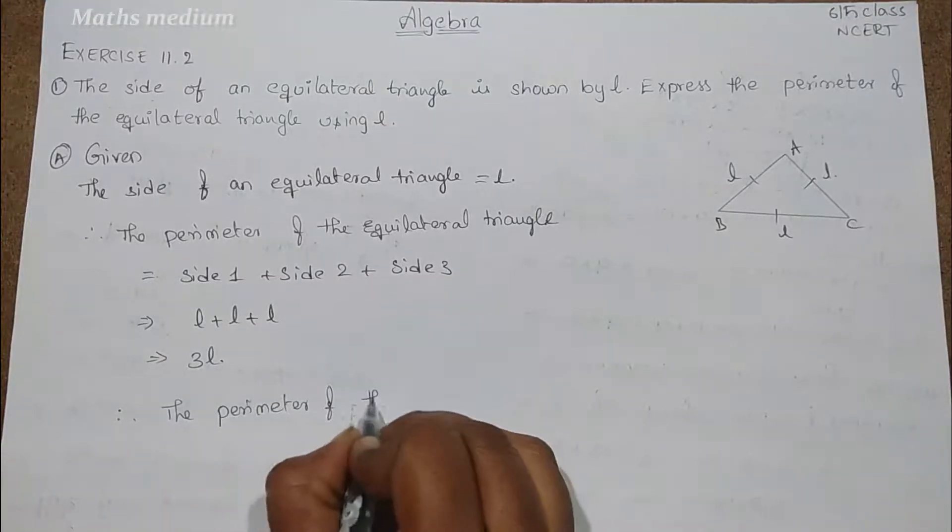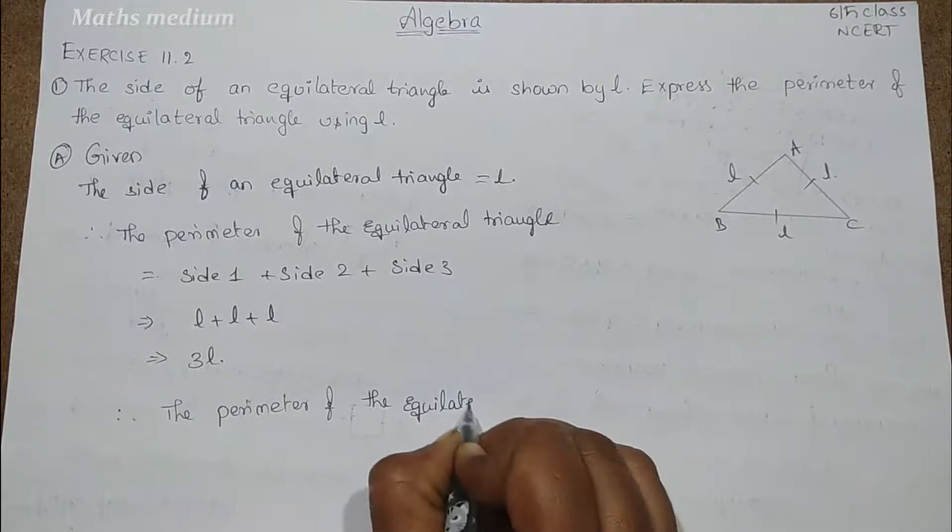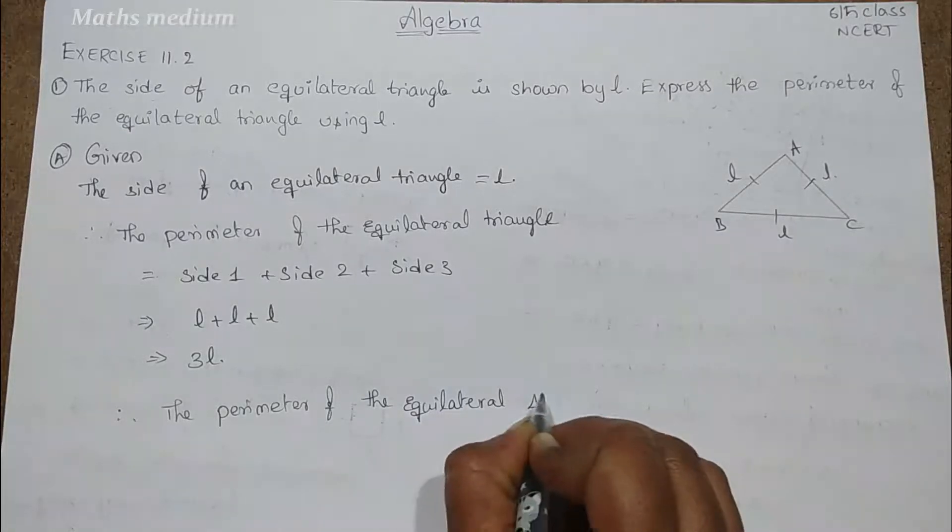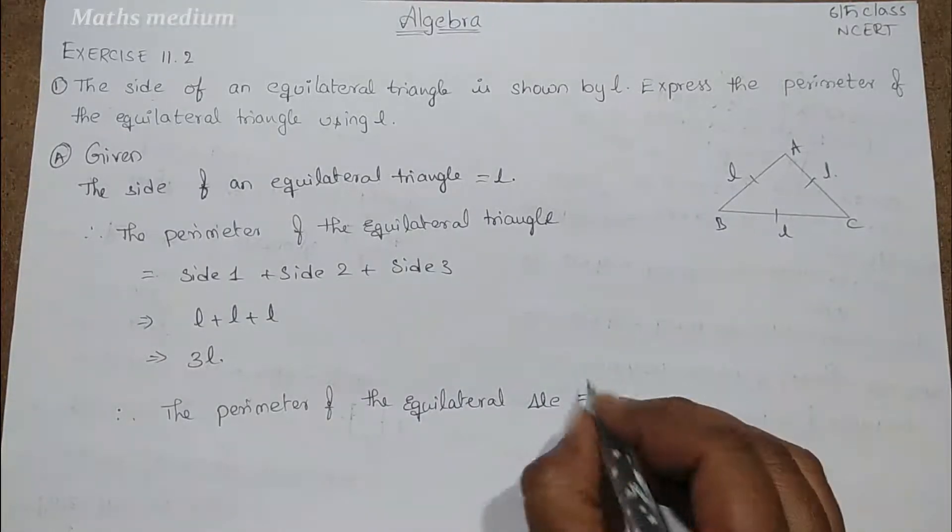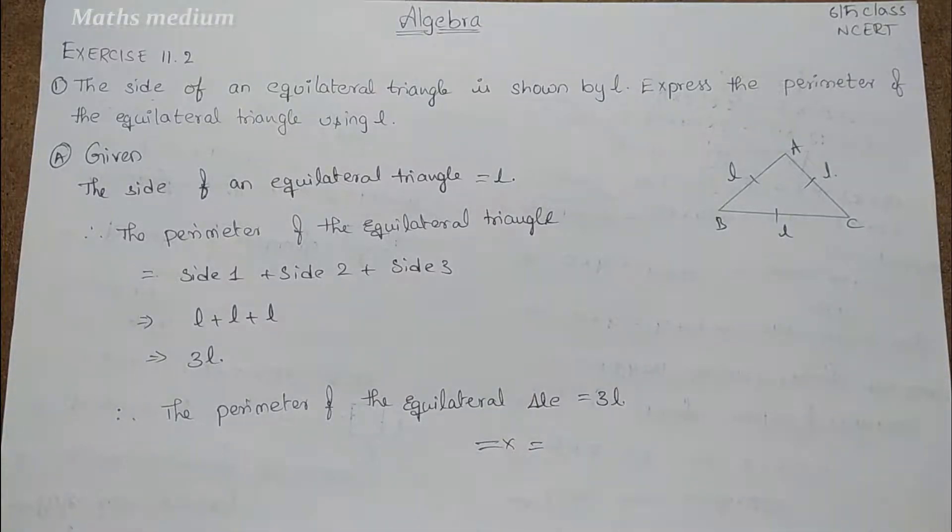So this is about how to find the equilateral triangle perimeter in terms of side L.